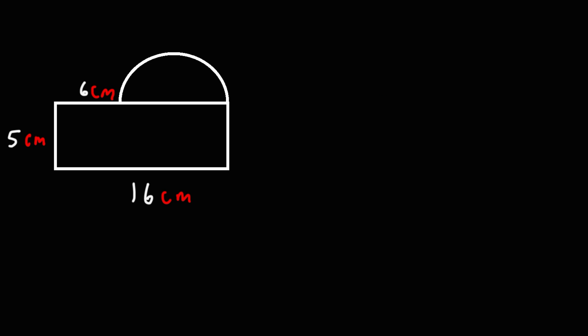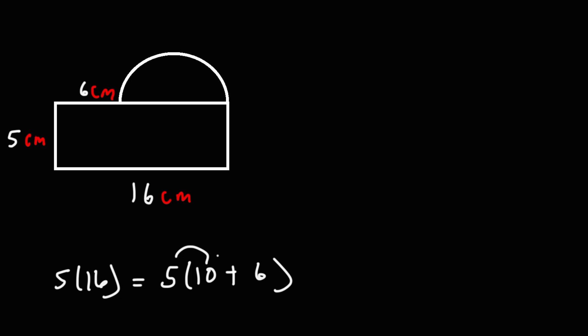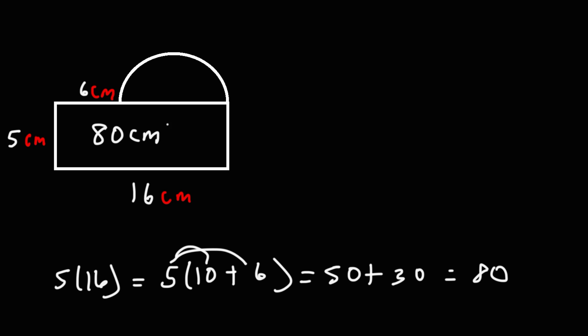Now let's move on to our next example. Feel free to pause the video and give it a try. We can immediately determine the area of the rectangle — it has a length of 16 and a width of 5. So 5 times 16: 5 times 10 is 50, 5 times 6 is 30, 50 plus 30 is 80. So the area of the rectangle is 80 square centimeters.